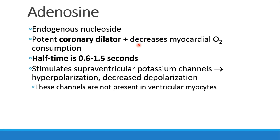Adenosine will stimulate supraventricular potassium channels, hyperpolarize them, and decrease depolarization. These channels aren't in the ventricular myocytes, so this is really working above the level of the AV node.